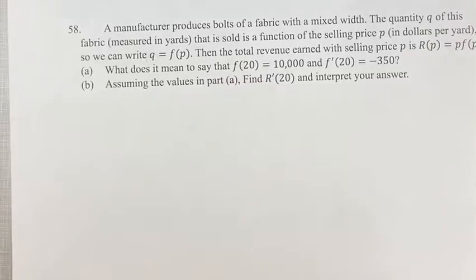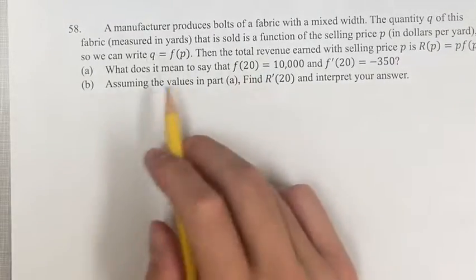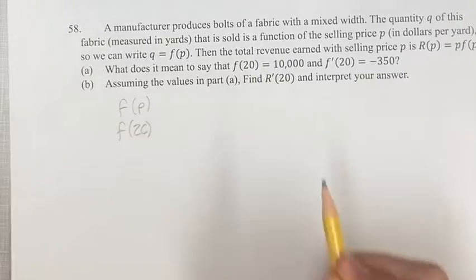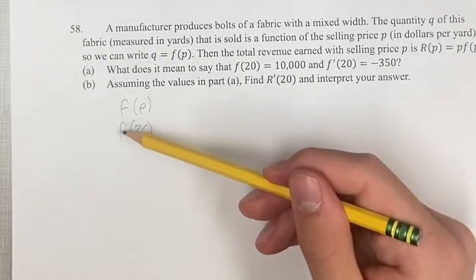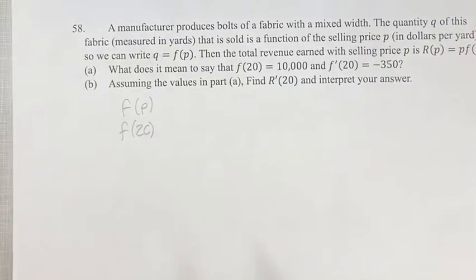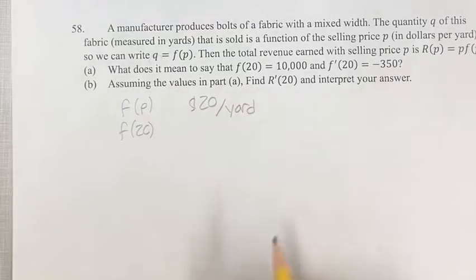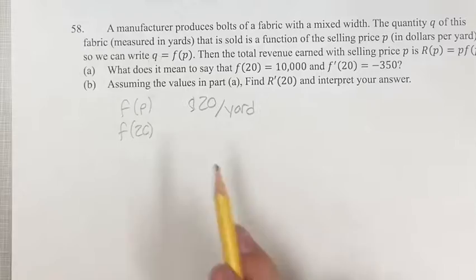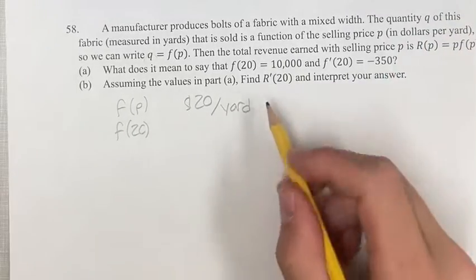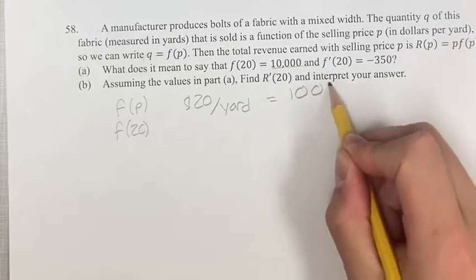So what does it mean to say that F of 20 is 10,000? That means we have F of P, so F of 20 - this means that the function F is taking in the value of P as the selling price $20 per yard. And when the fabric is sold at $20 per yard, the quantity that is sold is 10,000 yards.